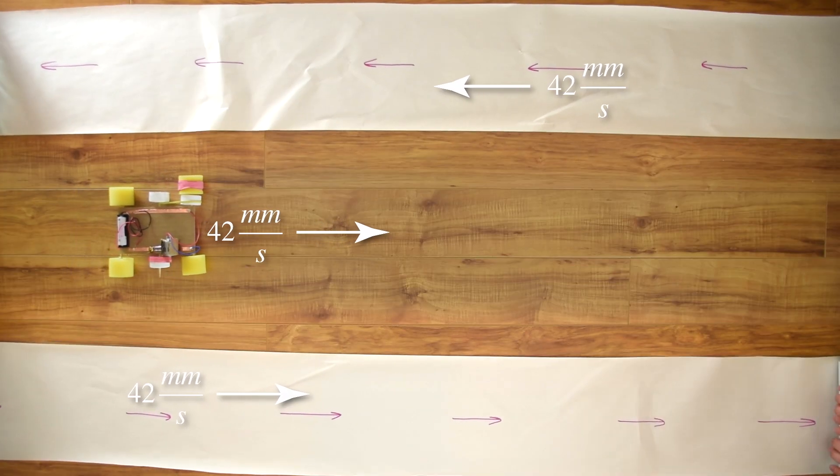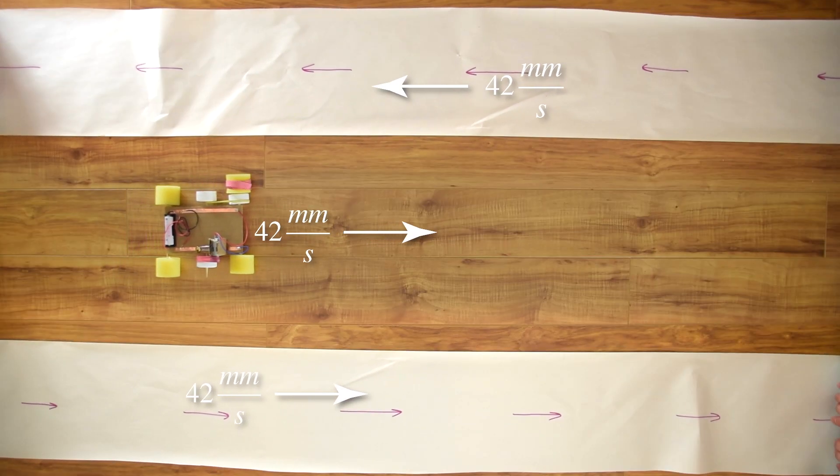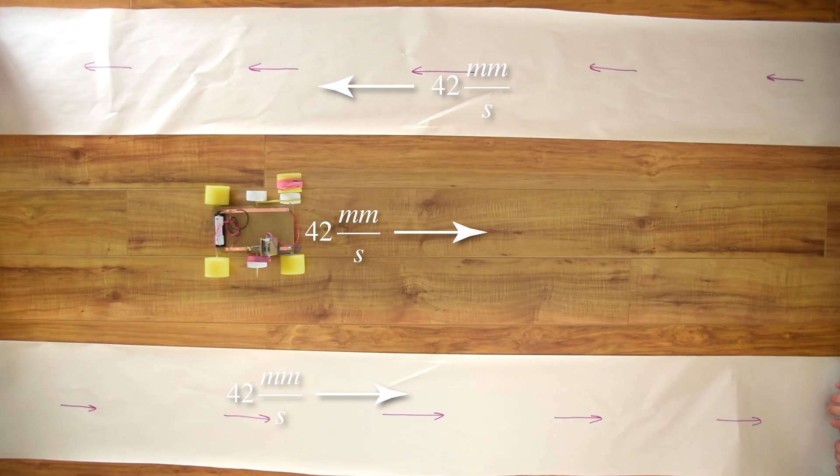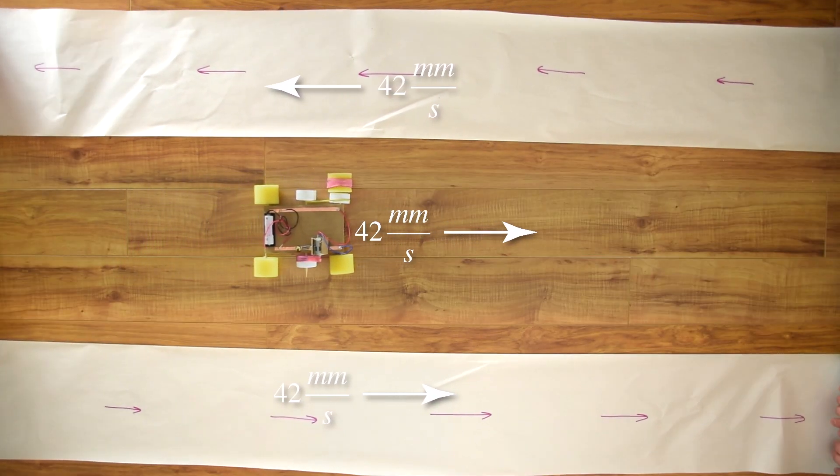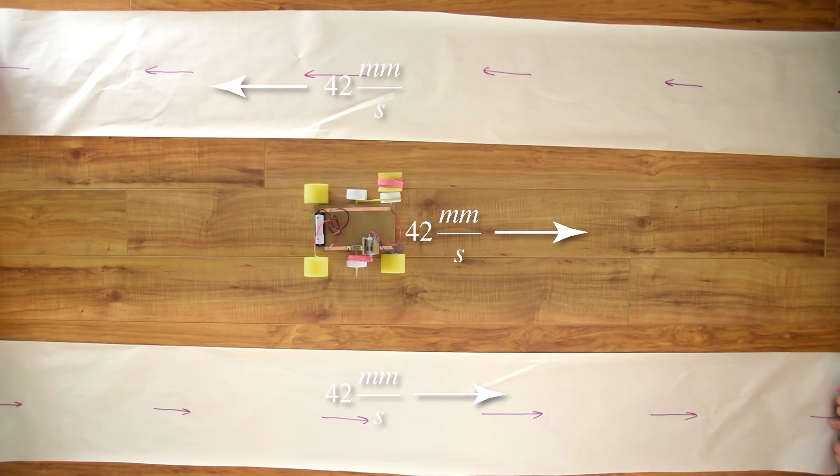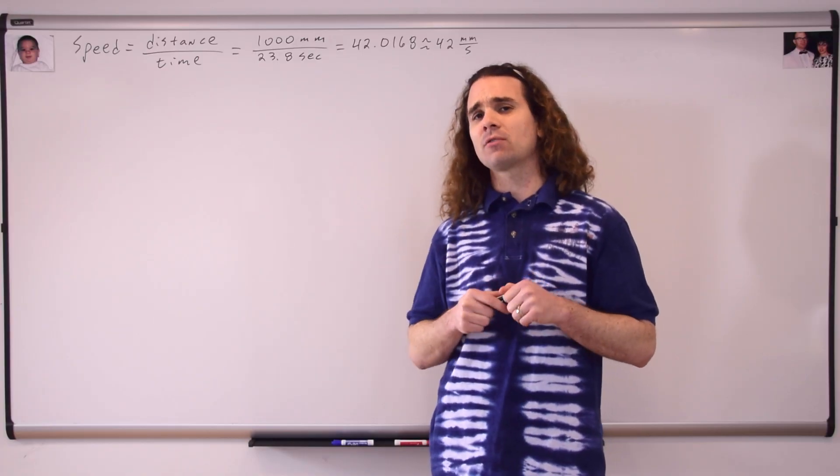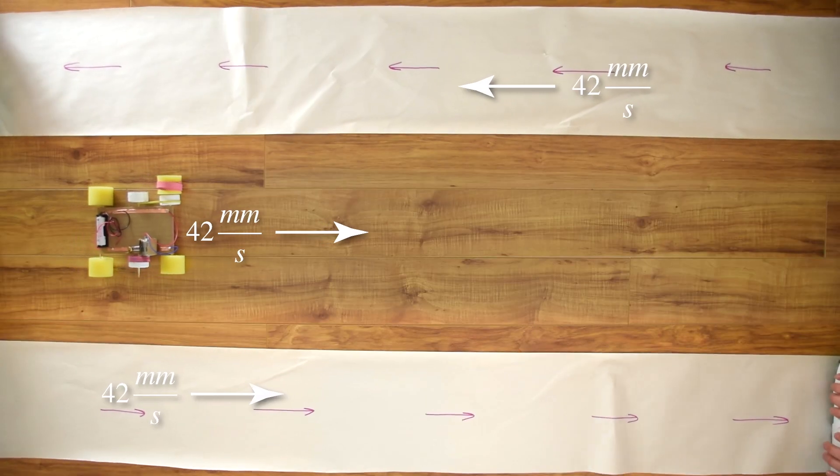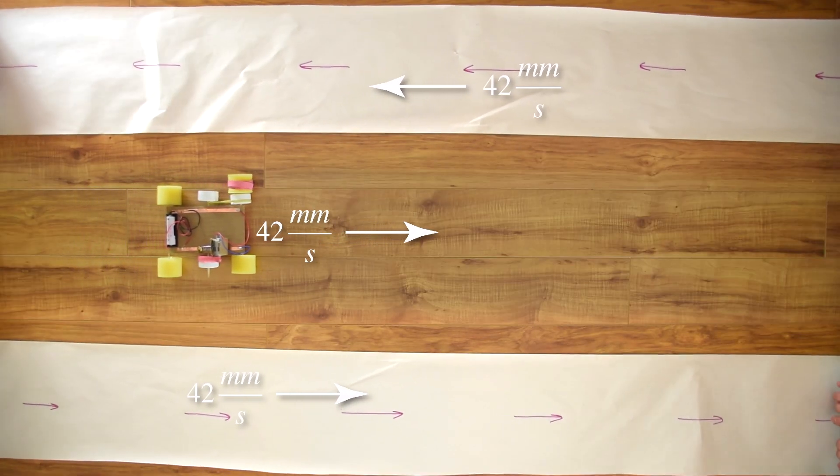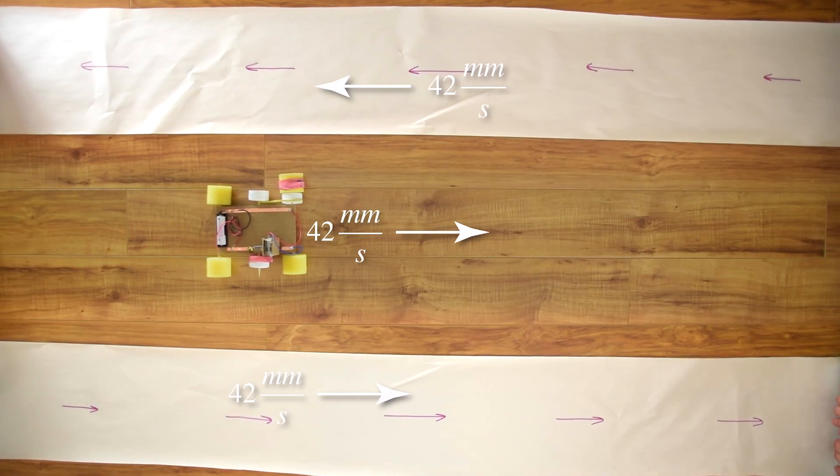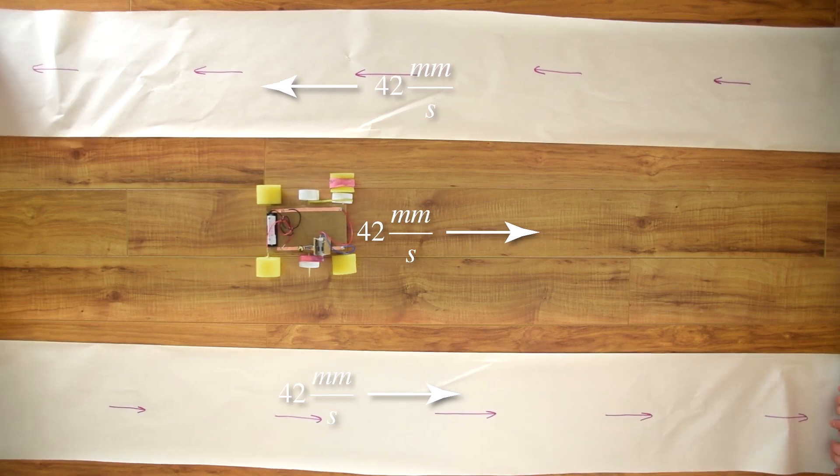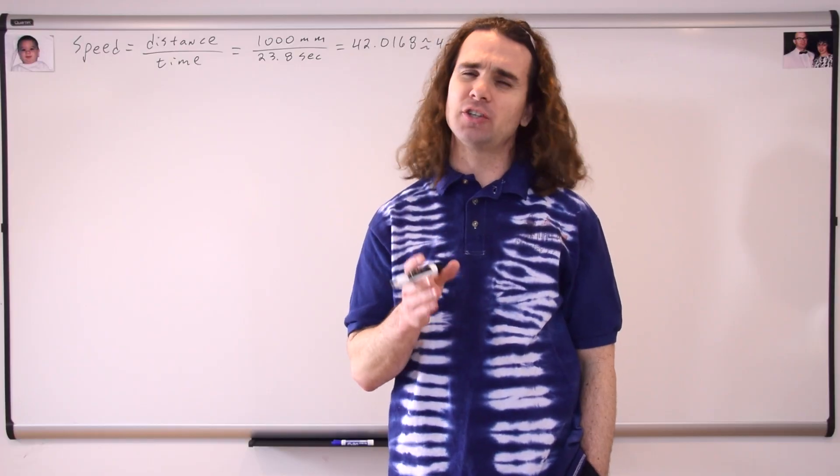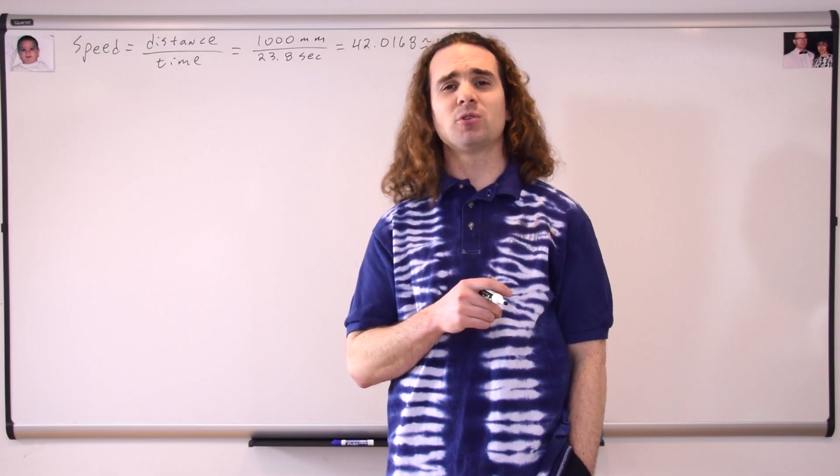We could put Slow Velocity Racer on the track on the top that is moving at 42 millimeters per second to the left, or we could put her on the track on the bottom that is moving at 42 millimeters per second to the right. Considering Slow Velocity Racer wants to move as quickly as possible, Bobby, on which track should she race? In order to move as quickly as possible, she should race on the bottom track. Yes, Bobby, and why should she choose the bottom track? Because then she'll be moving at 84 millimeters per second. Absolutely correct, Bobby.